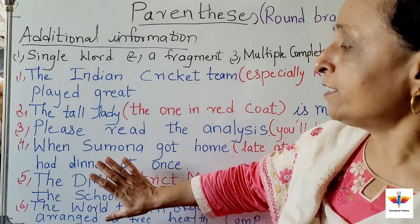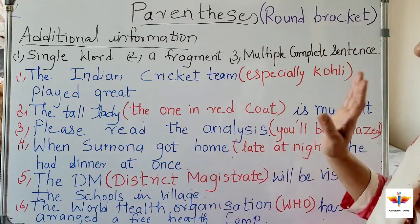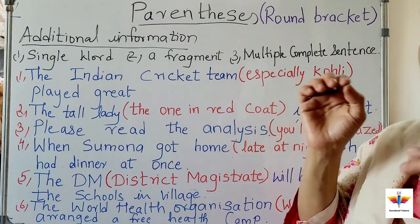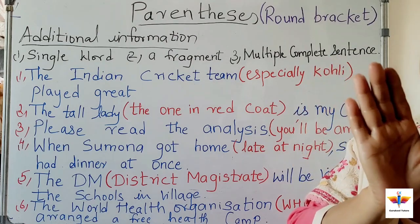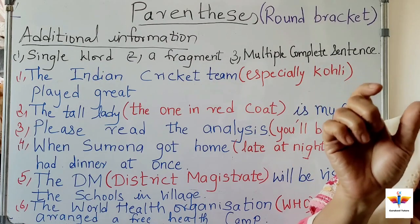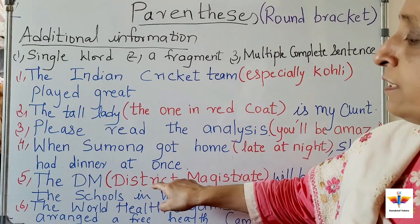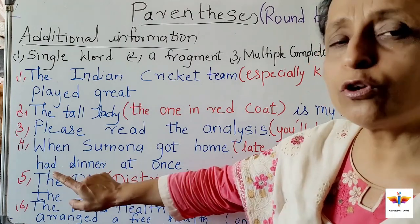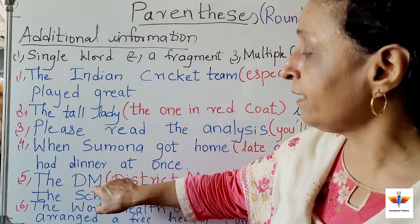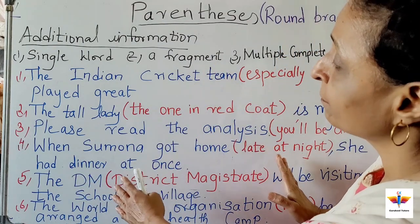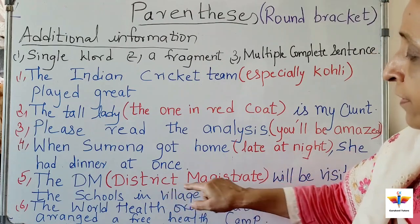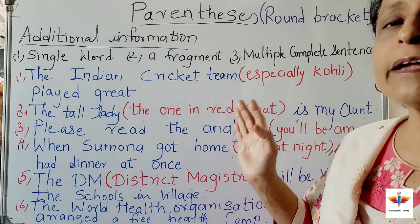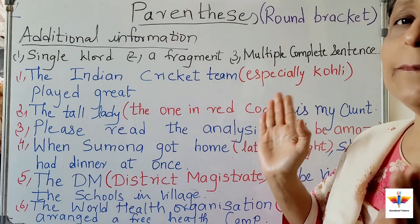Most of the time you will be using parenthesis for an abbreviation. In an abbreviation, you use the initial letters of a word. For example, 'district magistrate' becomes DM — D for district, M for magistrate. You say 'the DM' and give the full explanation in the bracket: 'DM (district magistrate).' So you use this round bracket to explain the abbreviation. For example: 'The DM (district magistrate) will be visiting the school in the village.'